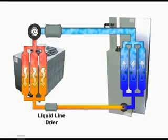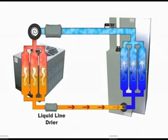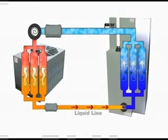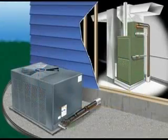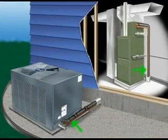After passing through the liquid line dryer, the liquid refrigerant flows through the liquid line. This line is the smaller of the two lengths of tubing that connect the indoor and outdoor units together.